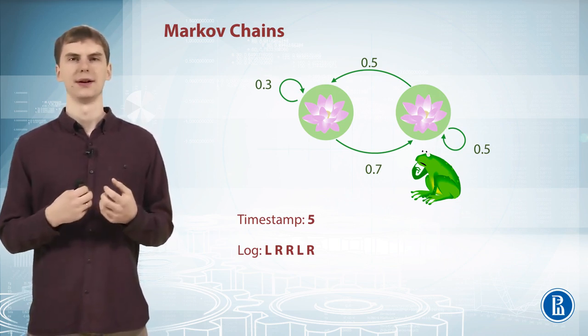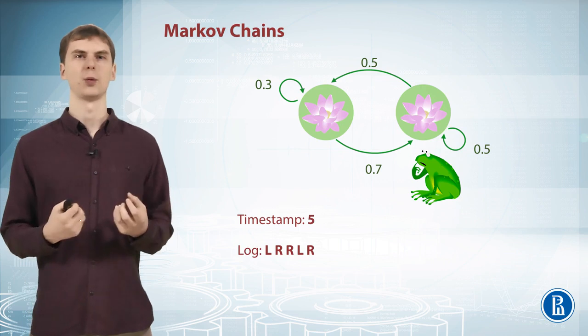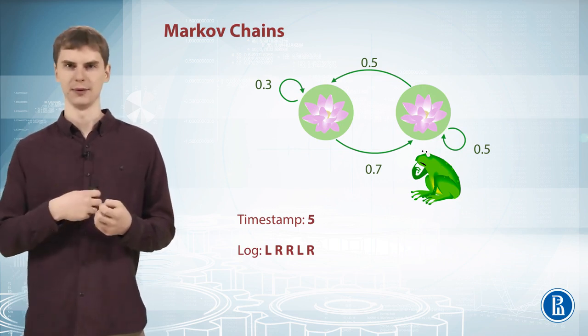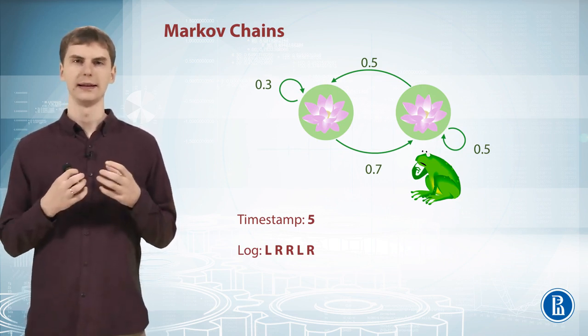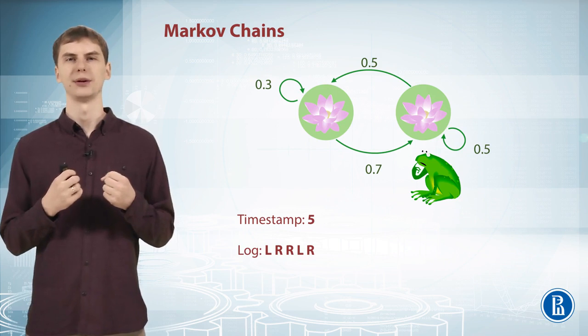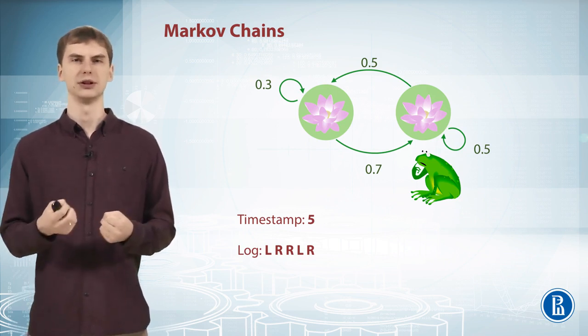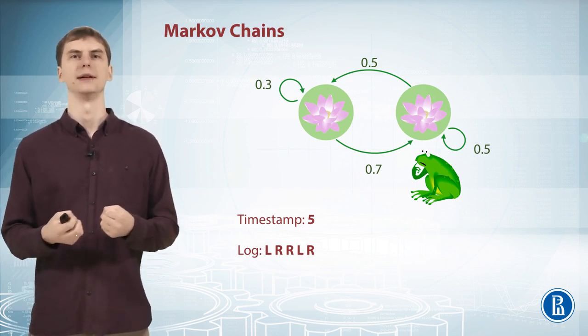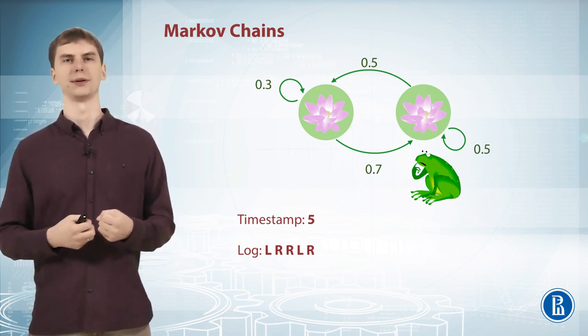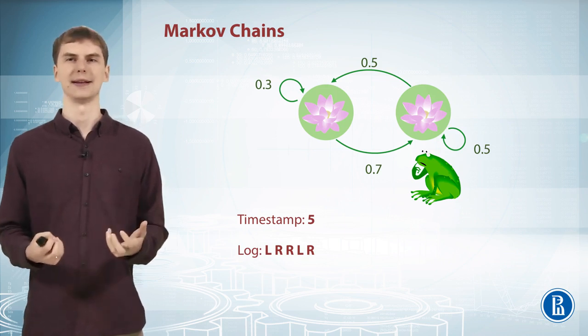This is called a Markov chain because the next state depends only on the previous state. The frog doesn't care where it was 10 time steps ago — the only thing it cares about is where it is now. To make a decision it just needs to know what the current state is.